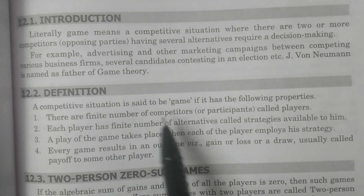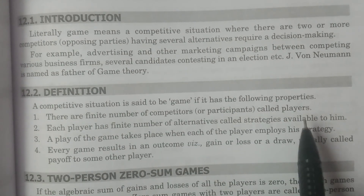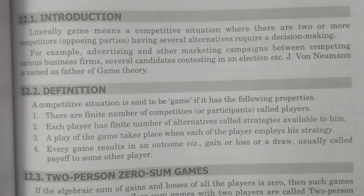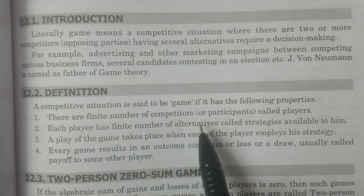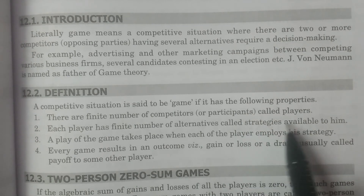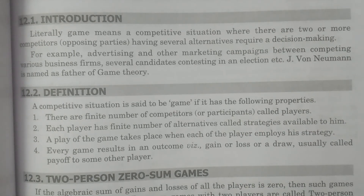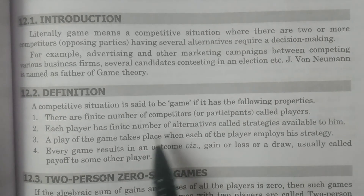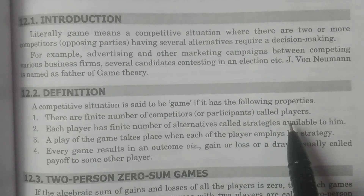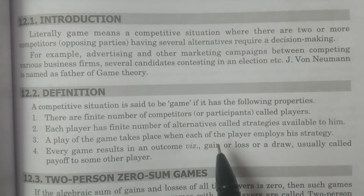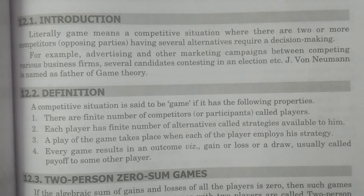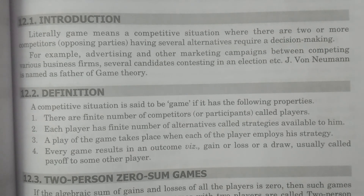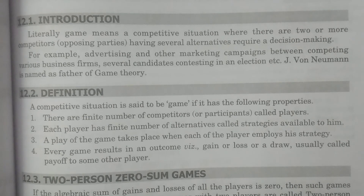A competitive situation is said to be a game if it has the following properties. First, a finite number of competitors. Second, each player has a finite number of alternatives — these are the strategies available to him. Every player has a finite number of alternatives and strategies.